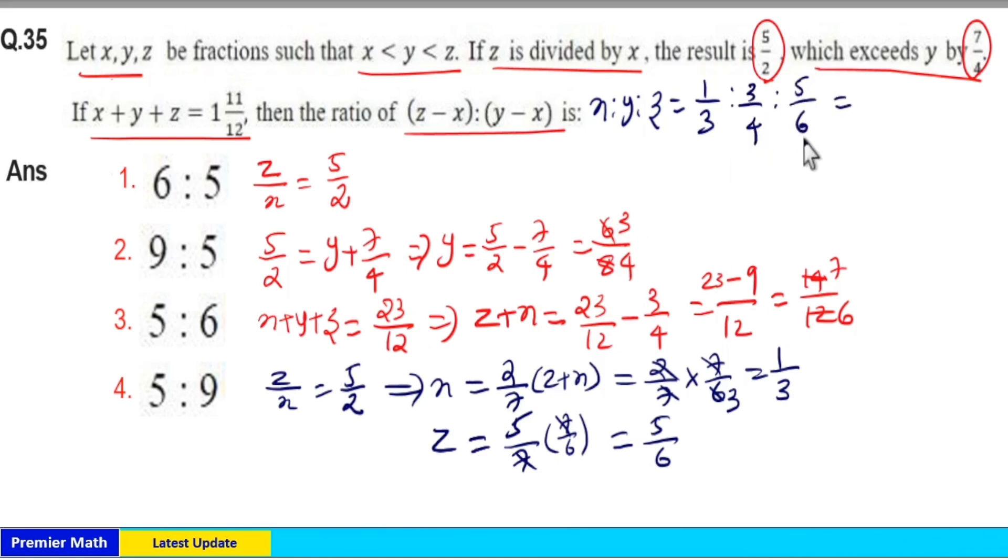The LCM of 3, 4, and 6 is 12. Multiplying each by 12: 3 goes 4 times, 4 goes 3 times (3 × 3 = 9), and 6 goes 2 times (2 × 5 = 10). So 4 : 9 : 10.